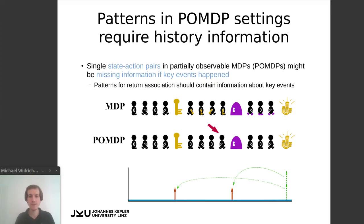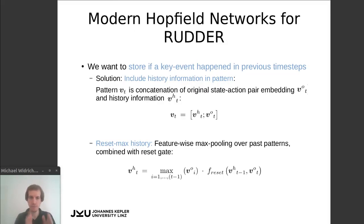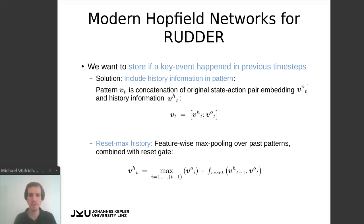Since we are only interested in key events that happened in the past — important things that we have already done or observed — we propose to use a reset-max history to store and compress this information. This reset-max history is essentially a feature-wise max pooling over the previous time steps of the episode combined with a reset gate. It is therefore very lightweight and fast to compute.